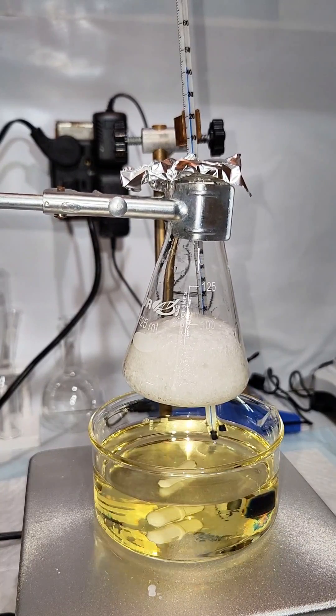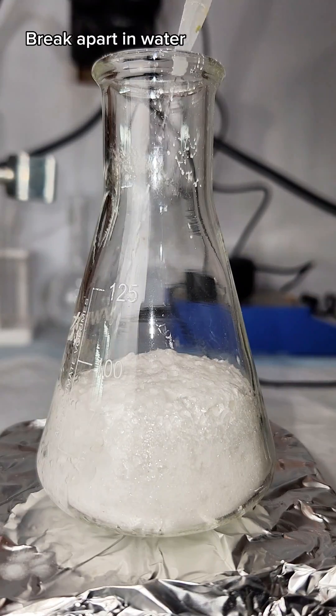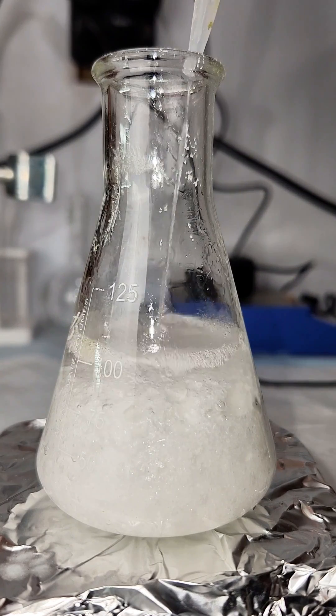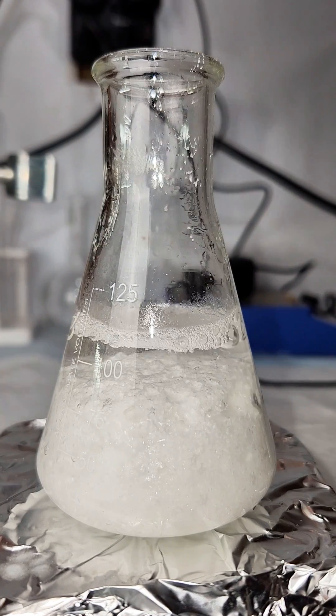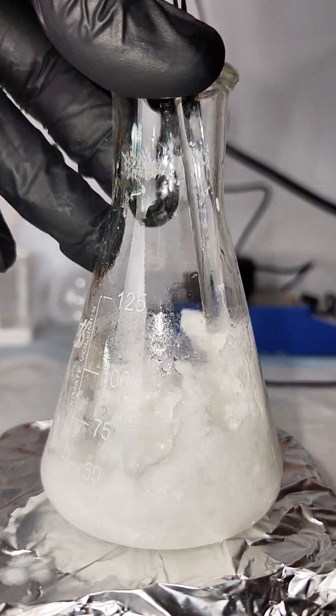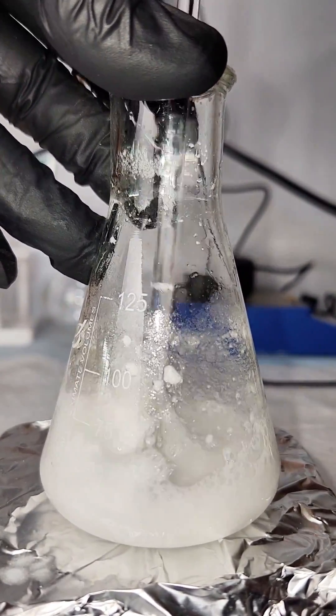Once it's all cooled down, I remove the phthalamide from my Erlenmeyer flask by squirting in some distilled water and then breaking apart the mass with a glass stir rod. I then pass it through vacuum filtration to collect my phthalamide. Since phthalamide is virtually completely insoluble in water, I really shouldn't lose any product here.